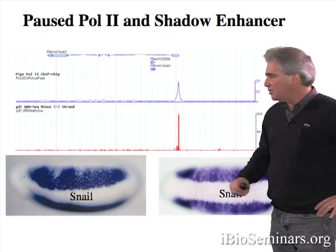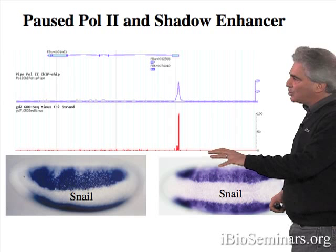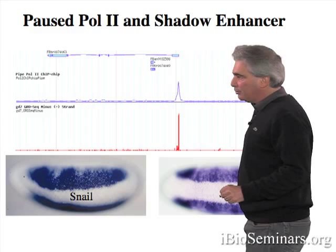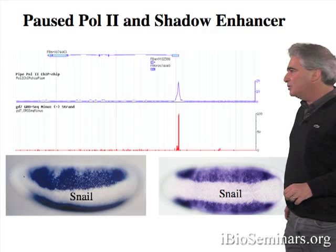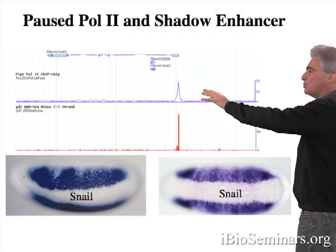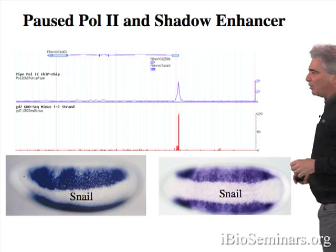Here, once again, we're looking at the expression of the SOG gene in the early embryo. SOG is activated by low levels of the dorsal gradient in the lateral neurogenic ectoderm. It's kept off in the ventral mesoderm by the snail repressor. SOG is one of those genes that has both pause polymerase and a shadow enhancer — a primary intronic enhancer and a remote 5' shadow enhancer.